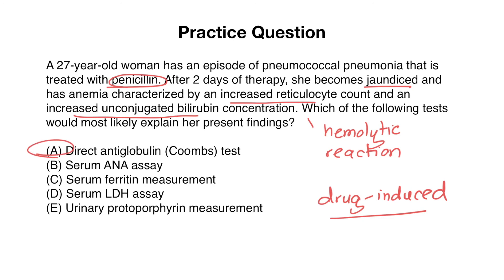A serum ANA assay wouldn't make sense here because it's used more for an autoimmune workup. A serum ferritin measurement is often used to test for hemochromatosis. A serum LDH assay can be elevated in a hemolytic reaction but is nonspecific and doesn't tell you what's going on — it just further confirms a hemolytic process. A urinary protoporphyrin measurement would be helpful if thinking of a heme metabolic disorder like acute intermittent porphyria, which is not relevant to this question.